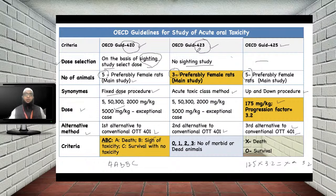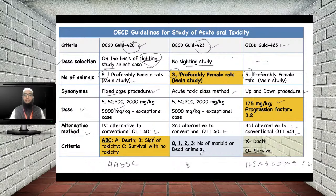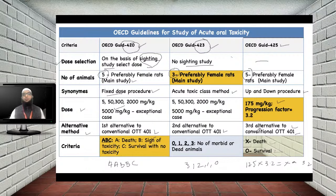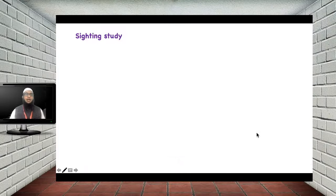In OECD 423, both death and morbidity are classified as the same observation. If 3 out of 3 animals are morbid or dead, the observation is recorded as 3; if 2 are affected, it is recorded as 2; and so on. In OECD 425, observations are recorded as 'X' for death and 'O' for survival.